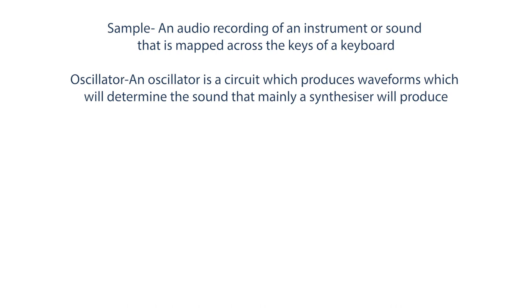An oscillator is a circuit which produces waveforms that are continuous, repeated and alternating without the need of an input. The waveform will be in the form of a sine, square, sawtooth or triangle. These in the end will determine the sound the synthesizer can produce.